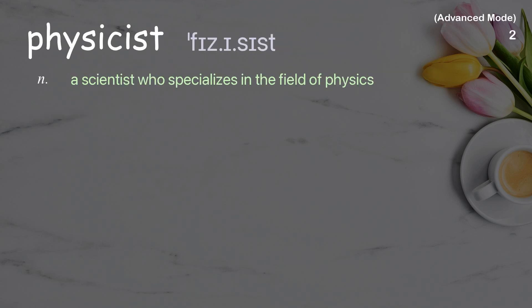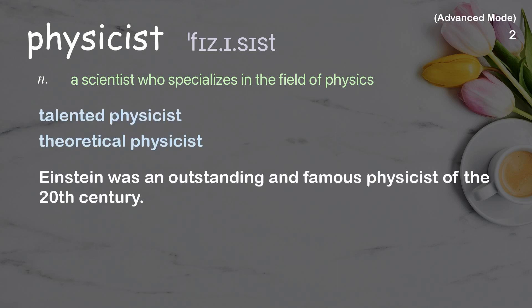Physicist: A scientist who specializes in the field of physics. Examples: talented physicist, theoretical physicist. Einstein was an outstanding and famous physicist of the 20th century.